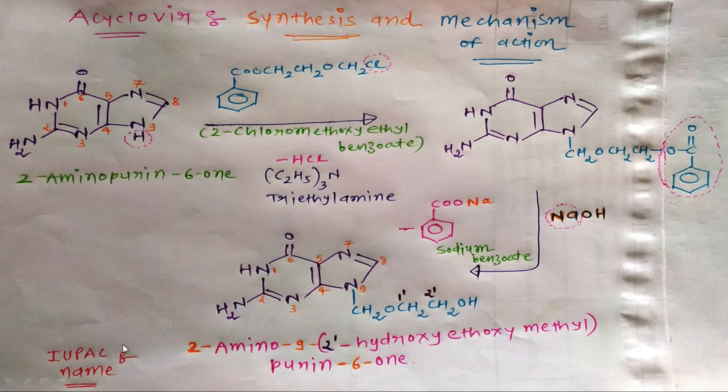Now for the IUPAC name of acyclovir, numbering follows the same system. Here on the chain is this ethyl group. This carbon is numbered 1, and this carbon is numbered 2.